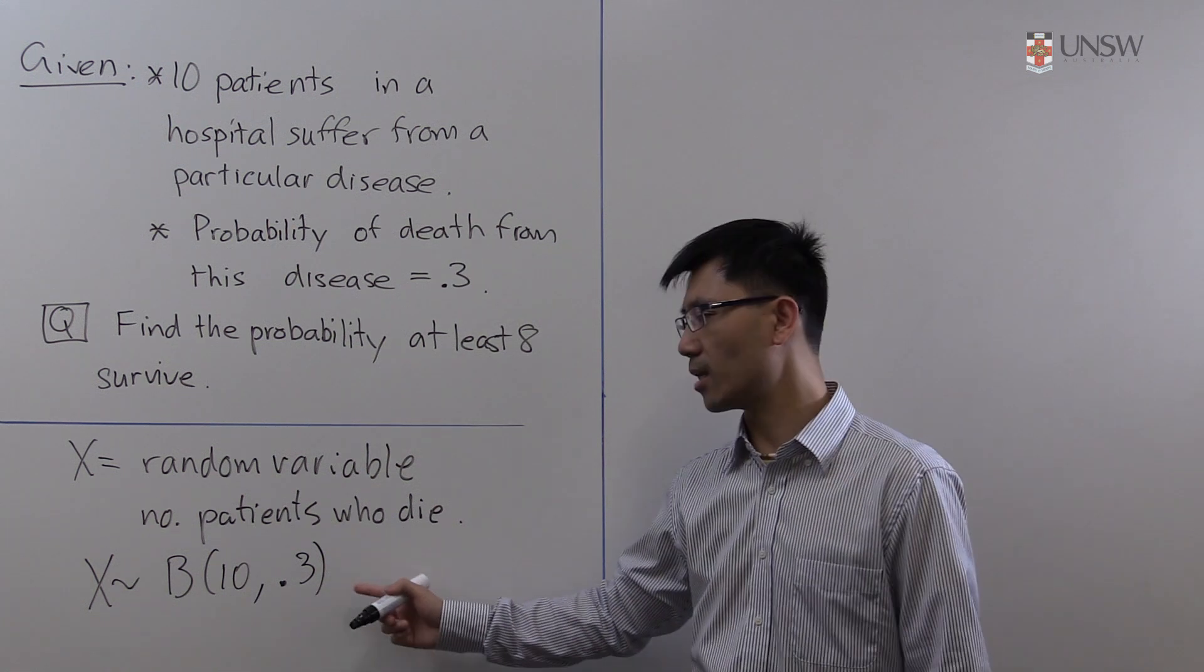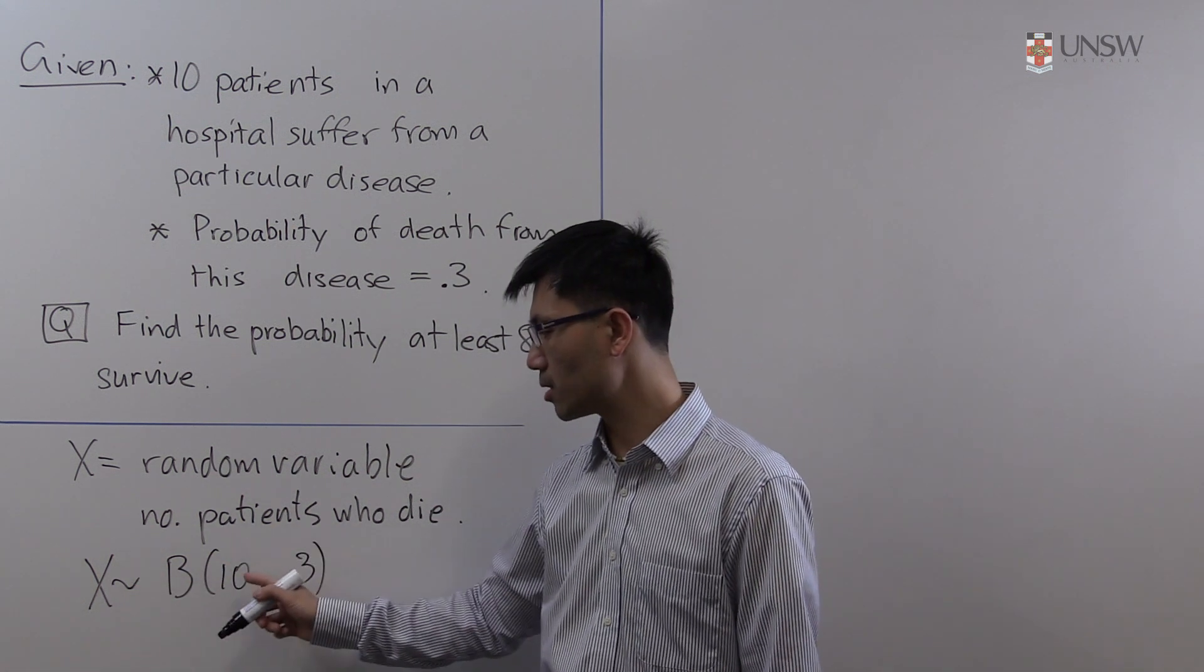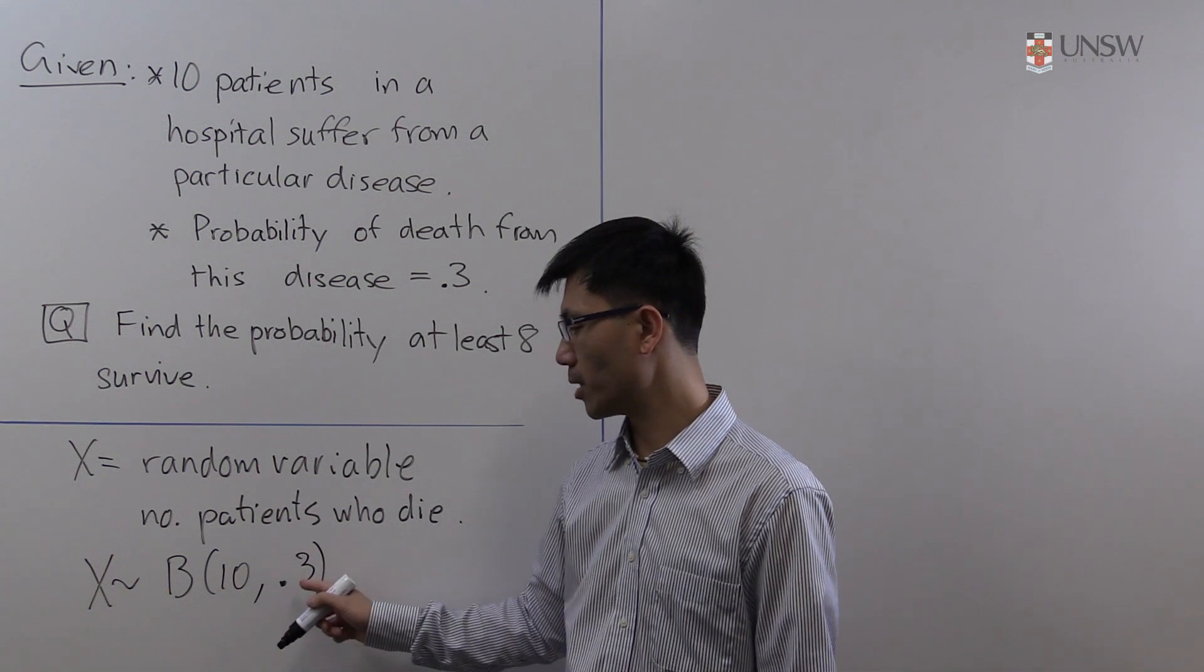So X is binomially distributed with parameters n equals 10 and p equals 0.3. Let's make that precise.